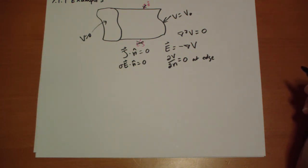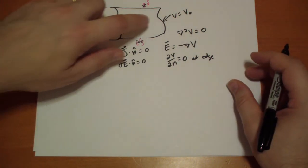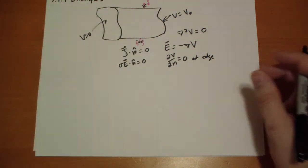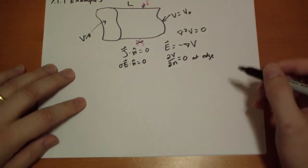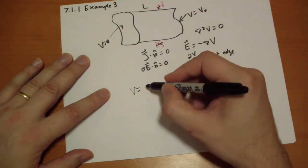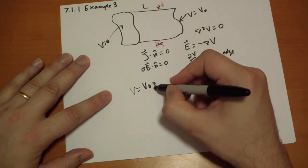So a really simple solution is that we have the potential over here is zero, and the potential over here is V naught. And it just gradually increases as you go along the length here, so we have a length L. So that can just be written out as the potential is equal to V naught times z over L.